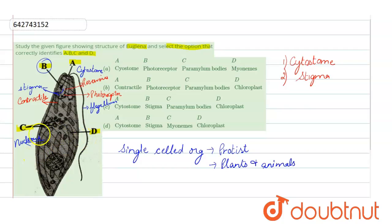Then we have the C option. C option states paramylum bodies. This is called paramylum bodies. Then we have got the C option which states paramylum bodies. This is called the paramylum bodies.